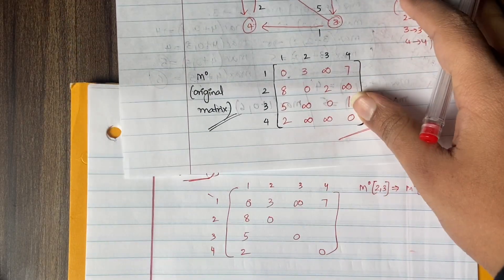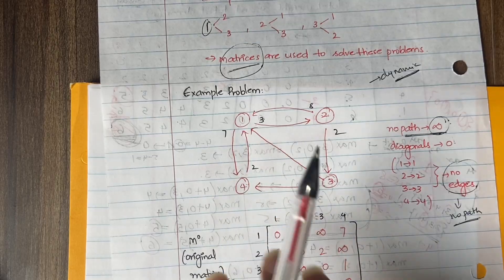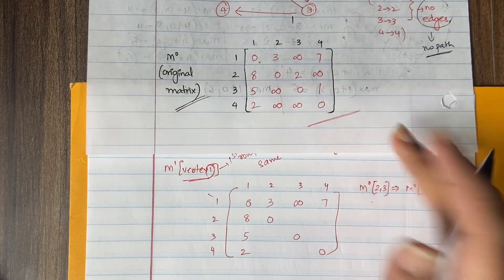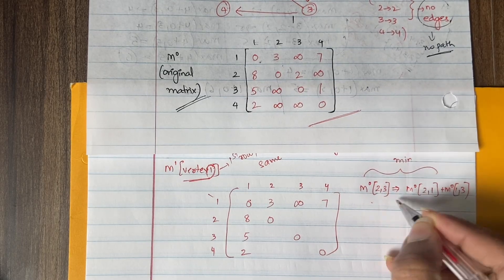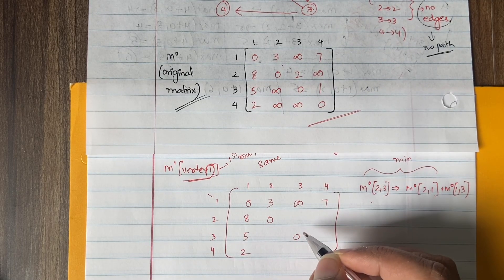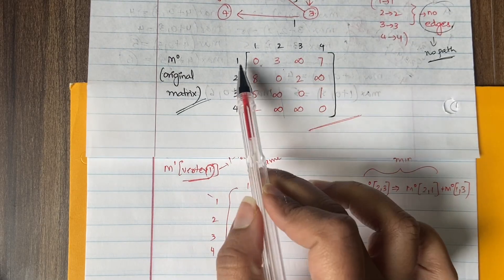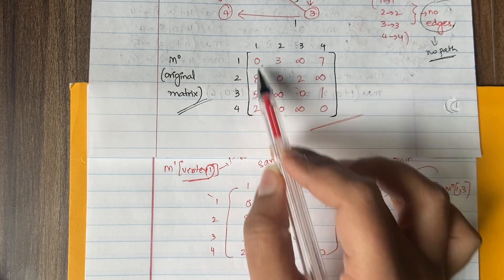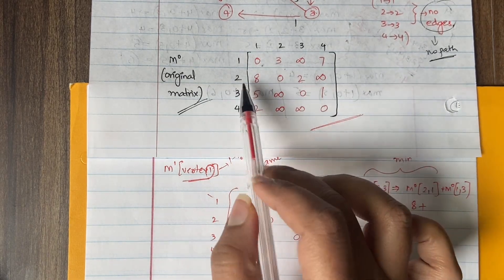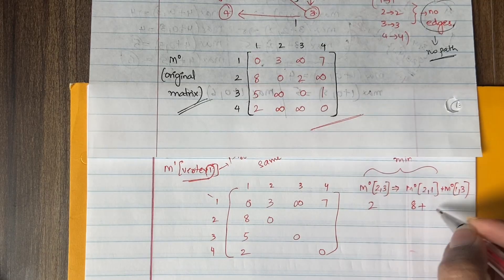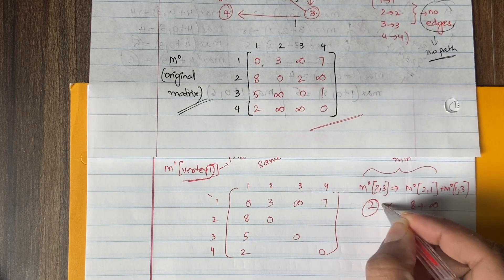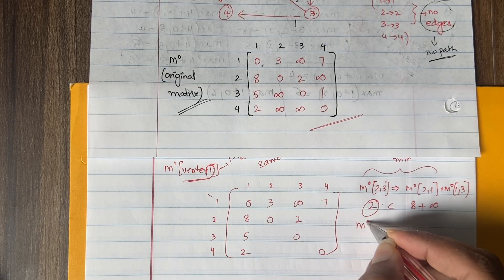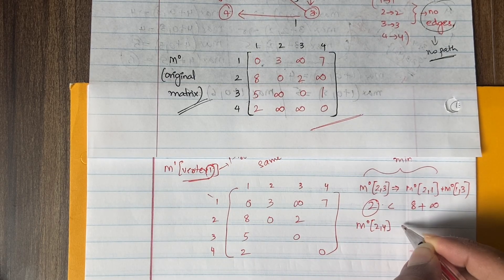So we check: direct M0[2,3] = 2, versus M0[2,1] + M0[1,3] = 8 + infinity. The minimum is 2, so we take 2. For M1[2,4]: direct M0[2,4] = infinity, versus M0[2,1] + M0[1,4] = 8 + 7 = 15. Since 15 is less than infinity, we write 15.